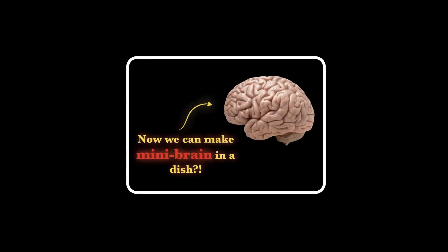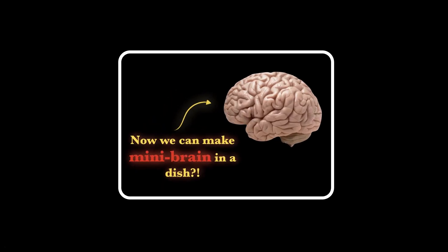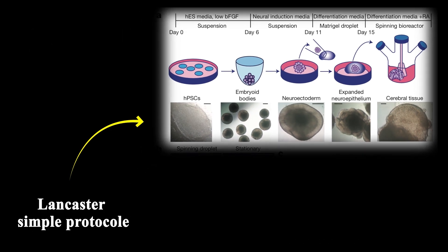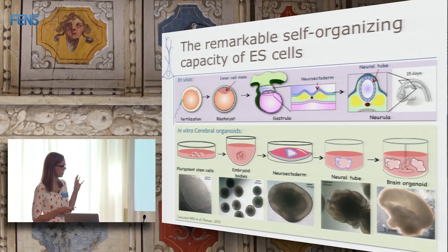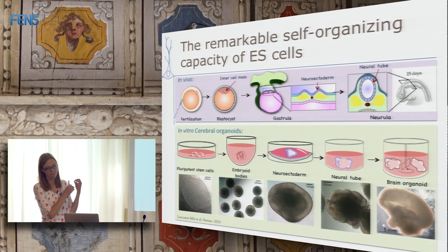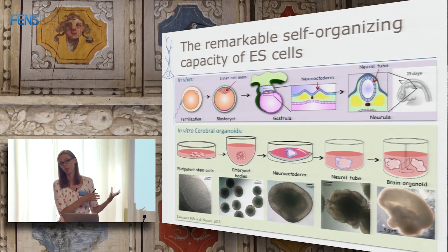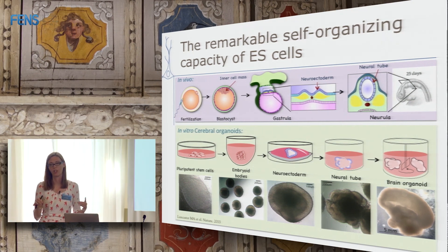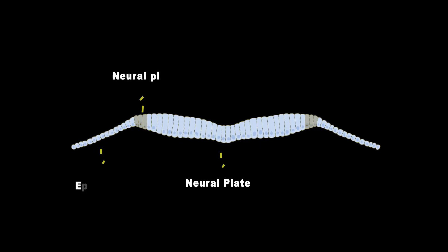Madeleine Lancaster discussed how they create brain organoids using a medium known as neural induction medium, though she later clarified that this medium is actually a simple one without any specific signaling molecules. Without BMP4, the ectoderm undergoes changes including elongation and thickening, which ultimately forms a structure called the neural plate.